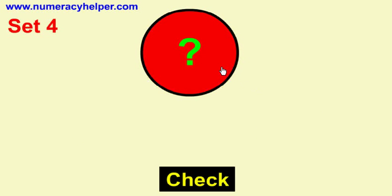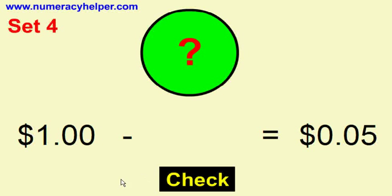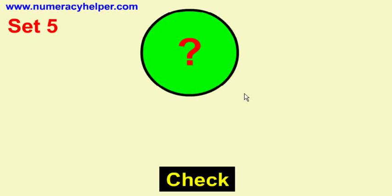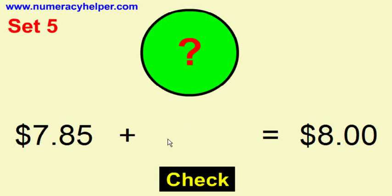Set four. You'll notice that this is slightly different. You've got change from a dollar, and that's five cents. How much must have been paid for the item? And there's the answer up there that students can work out. I'll just finish off the last few sets quickly.